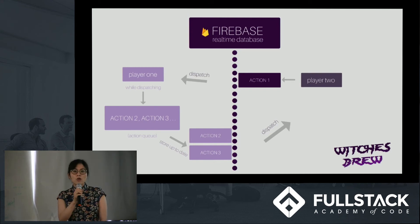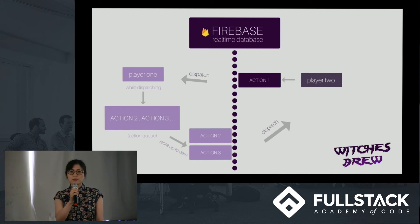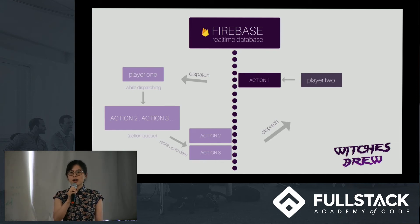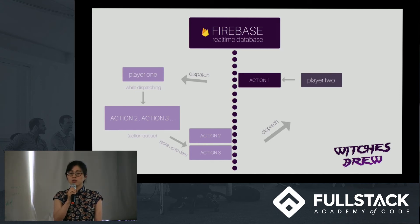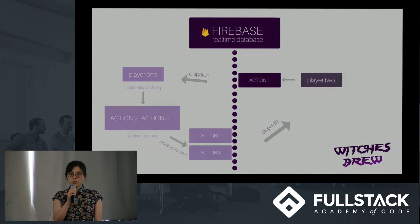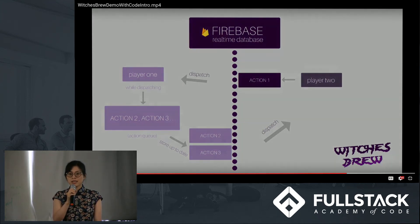We solved this problem by altering our Firebase middleware. While a player is catching up with the store by dispatching all previous actions from Firebase, we don't dispatch her own actions — we put them in a queue. When her store is up to date, we push her actions to Firebase, and all players can then dispatch them. In this way, our game state will be consistent.